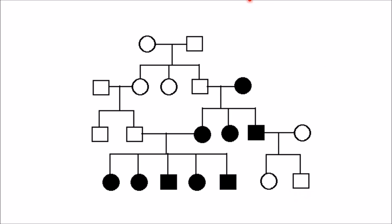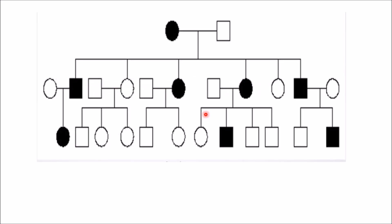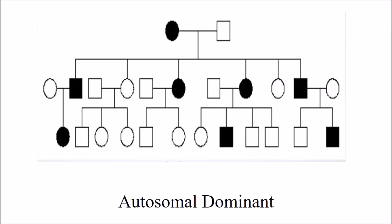Now let's look at some practice exercises. In this pedigree chart, every generation is affected with no skipping, so it is a dominant pattern. We can also see male-to-male transmission — a father passing the trait to his son. Therefore, in total, this is an autosomal dominant inheritance.